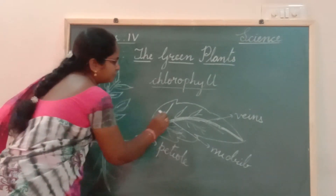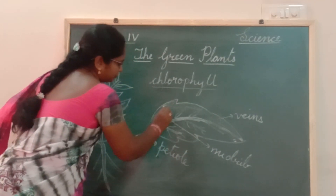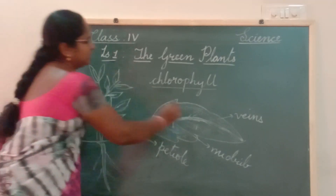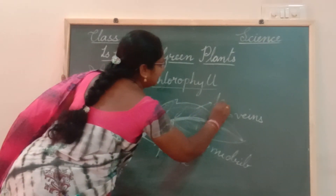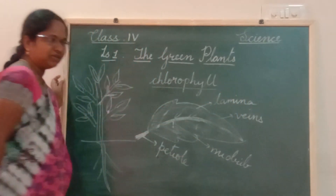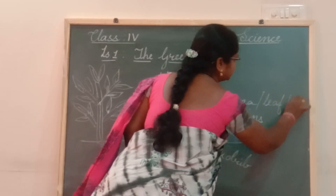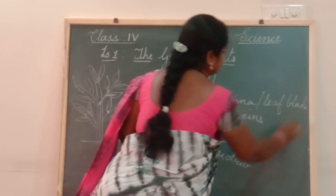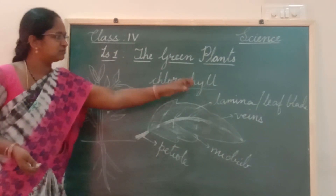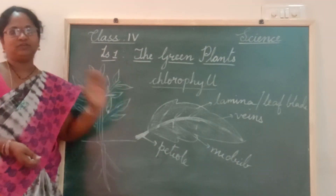The leaf is green in colour and has a flat portion. The flat portion of the leaf is known as the lamina, also called the leaf blade. This flat portion contains the chlorophyll. This is about the structure of the leaf.